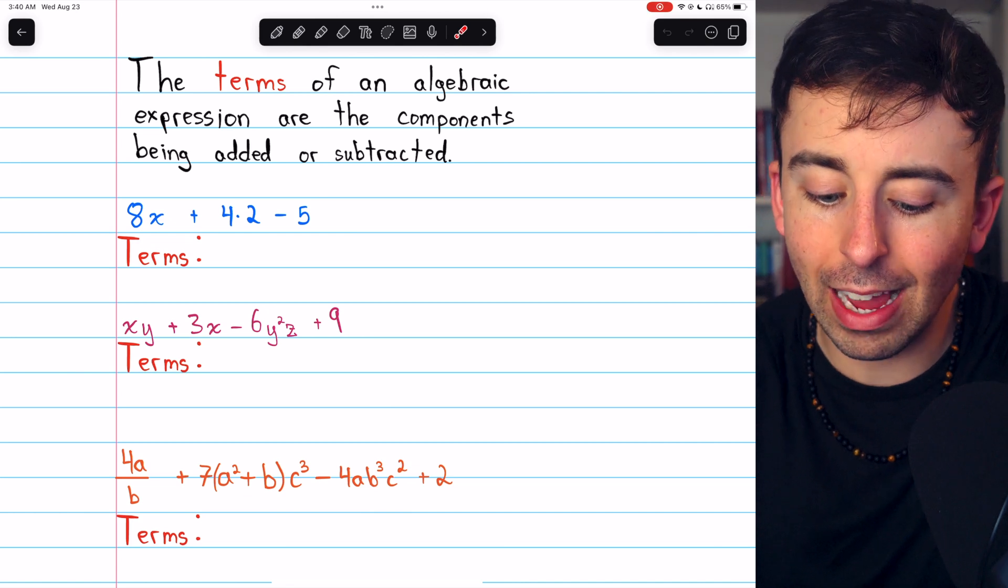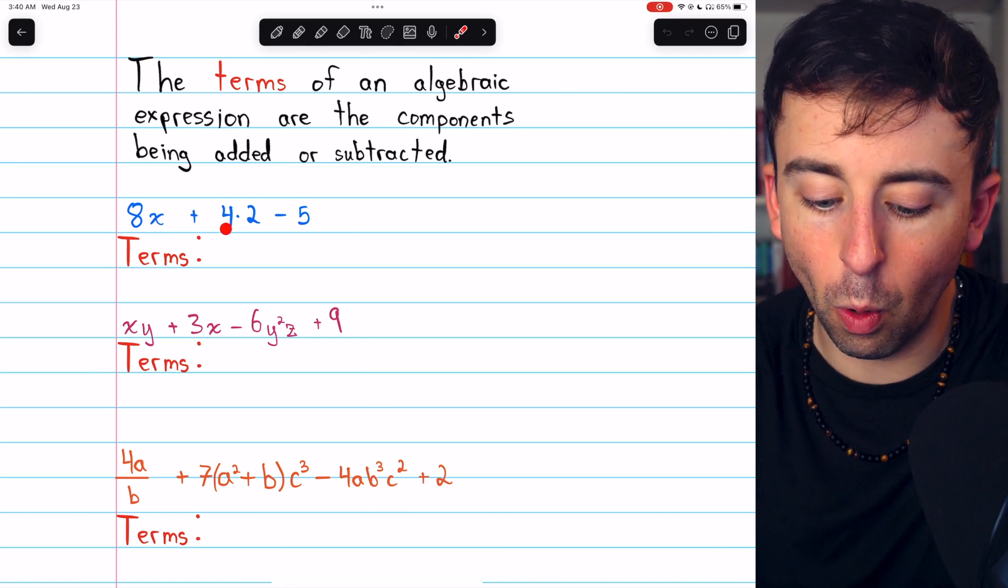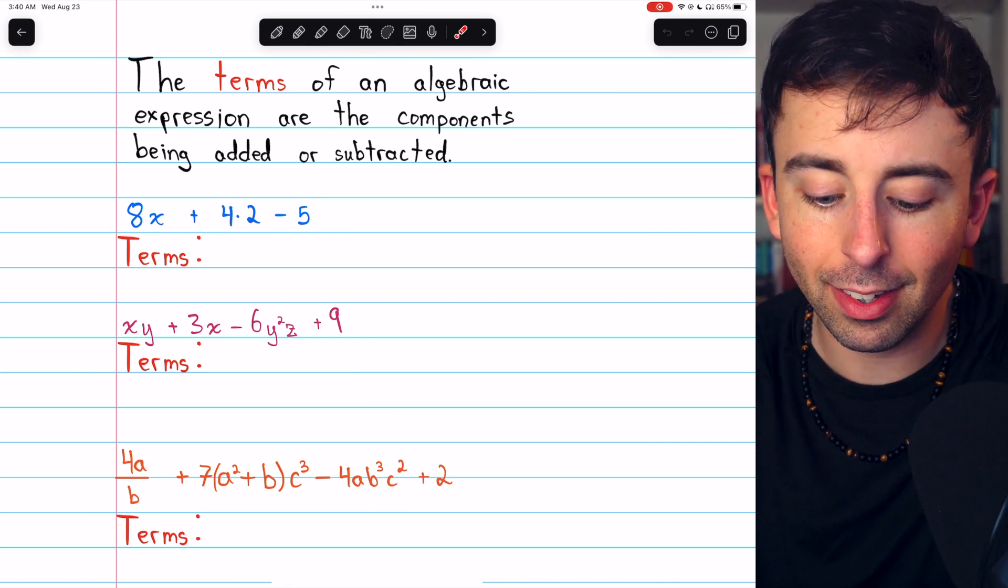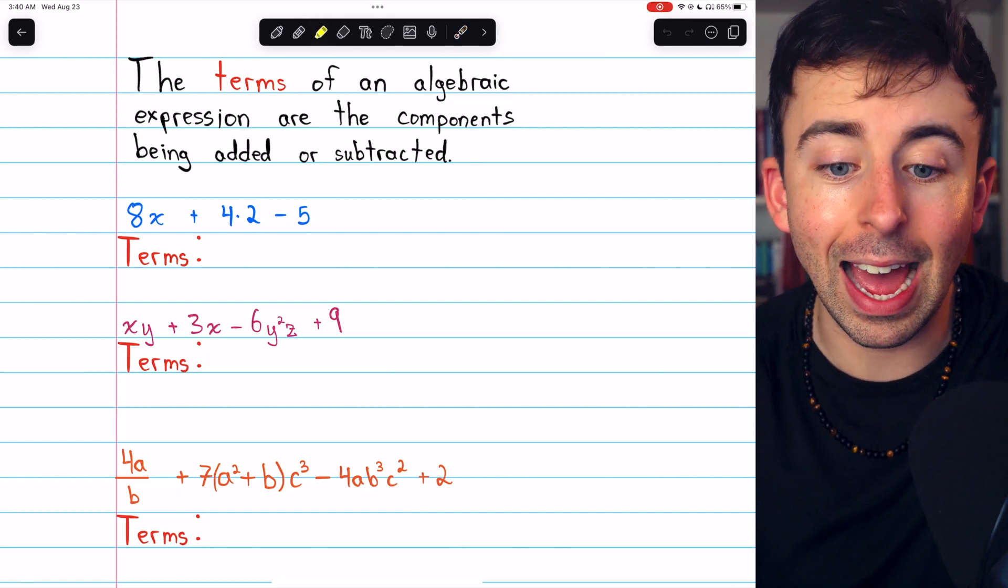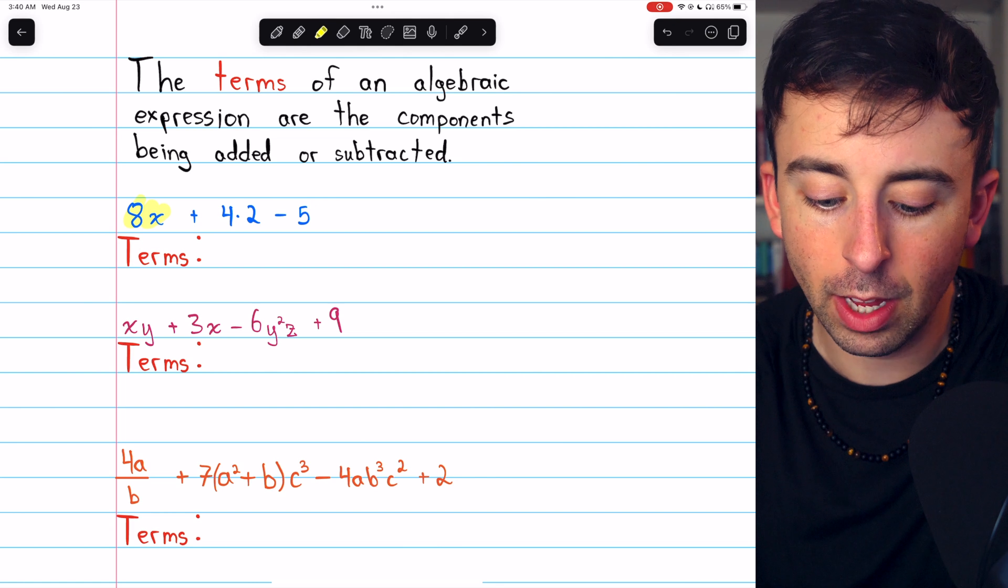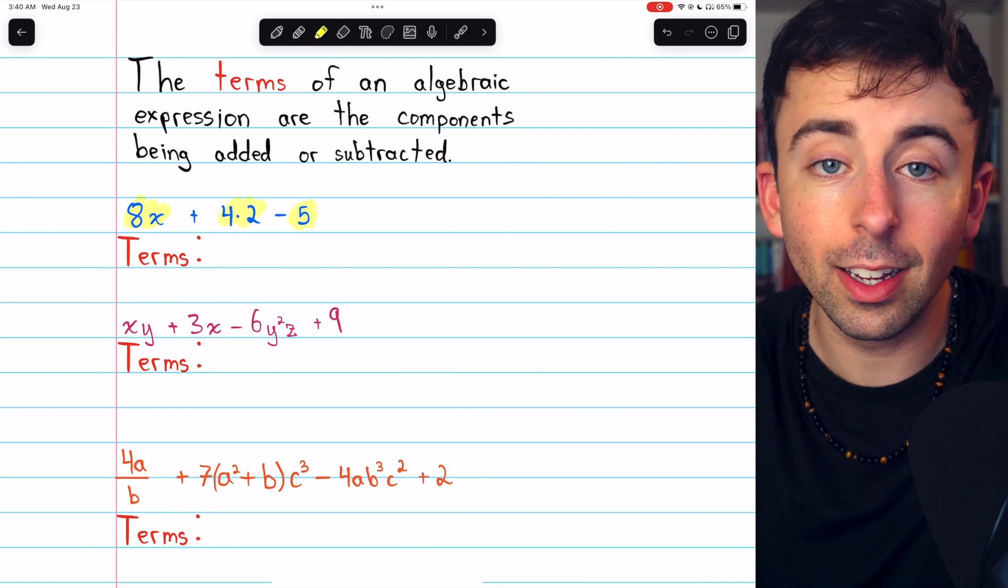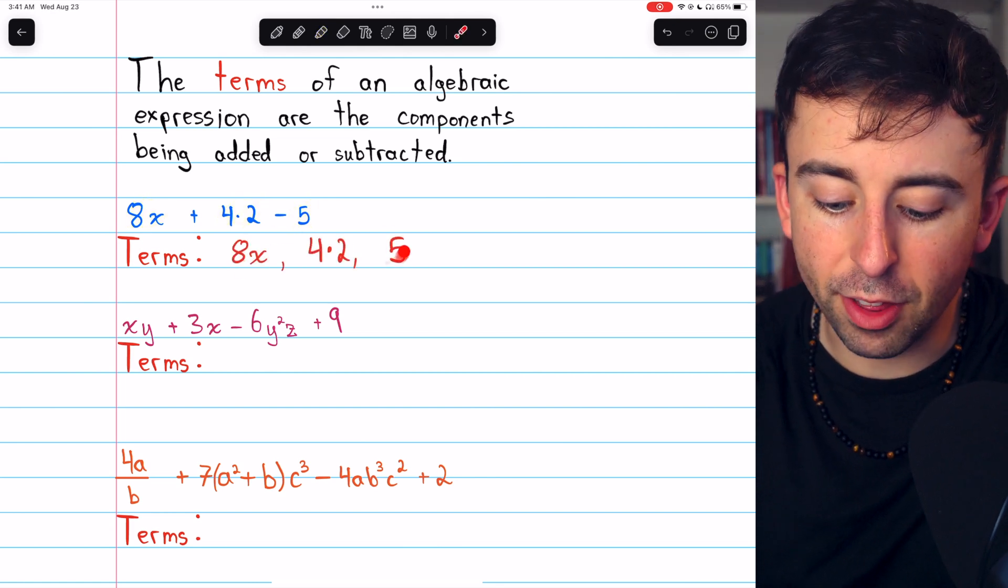So in this first example, 8x plus 4 times 2 minus 5, there are three terms, the three things that are being added or subtracted: 8x, 4 times 2, and 5. There are the three terms.